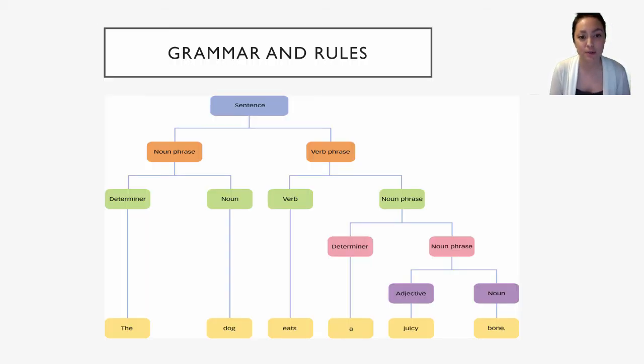And we have another visual representation of how we can break down grammar in the English language. So this might look a lot like your high school English classes. We have our overall sentence, the dog eats a juicy bone. We can break that down into the noun phrase, the dog, and the verb phrase eats a juicy bone. And we can break that down even further labeling the function of each word.